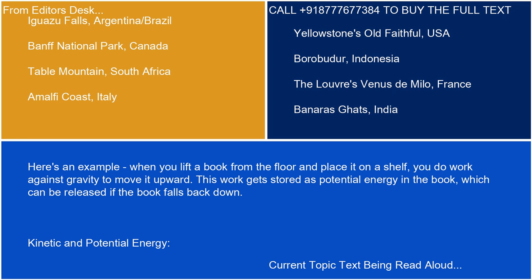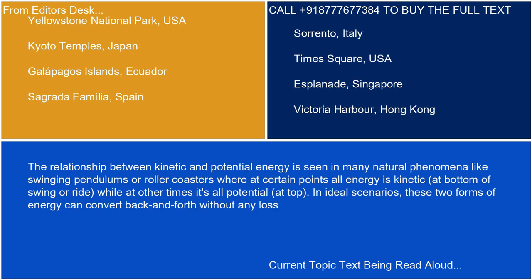Kinetic and potential energy. The relationship between kinetic and potential energy is seen in many natural phenomena like swinging pendulums or roller coasters, where at certain points all energy is kinetic — at the bottom of a swing or ride — while at other times it's all potential — at the top. In ideal scenarios, these two forms of energy can convert back and forth without any loss.